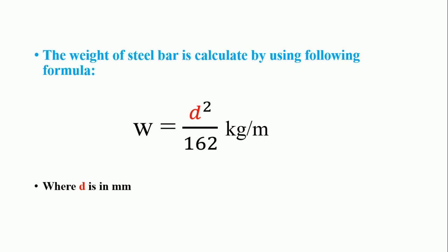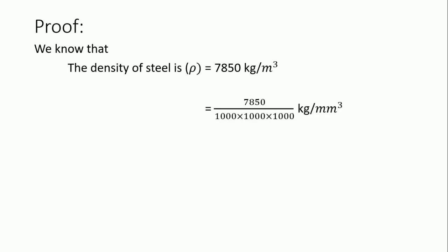In this formula, d is in mm. When we calculate using this formula, it gives us the weight in kg per meter. Now for the proof: we know that density of steel bar is 7850 kg per meter cube.